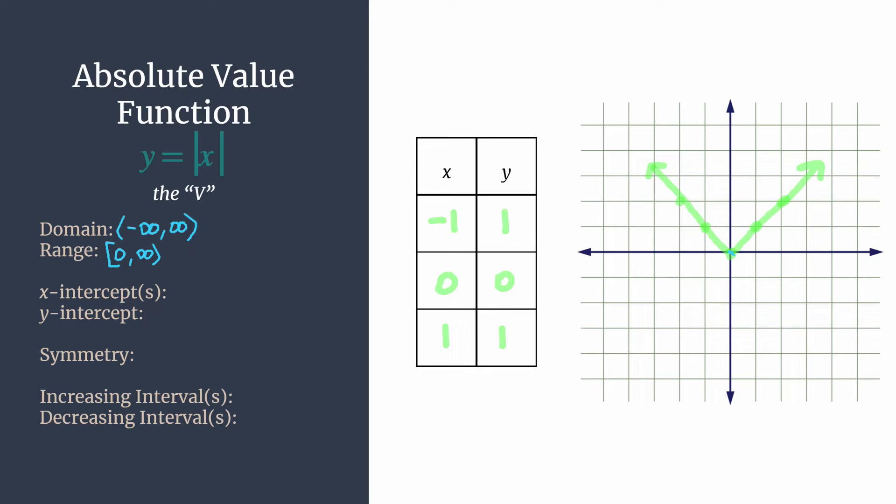Remember, if you need some help with interval notation, check out our video on that. All right, so now we can list the intercepts. We see that both the x and y intercept are just the origin here, so zero comma zero.